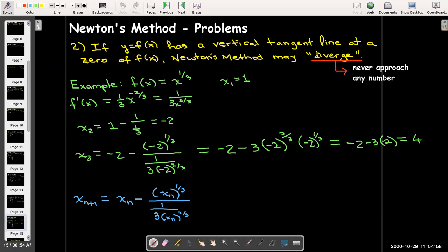Well, I'm going to multiply x sub n to the 1 3rd power times 3 times x sub n to the 2 3rds power. So again, I'll be multiplying two powers that have the same base. I'll be able to add the exponents and I'll have 1 3rd plus 2 3rds, which equals 1. So I'll wind up with x sub n minus 3 times x sub n, which gives me negative 2x sub n.